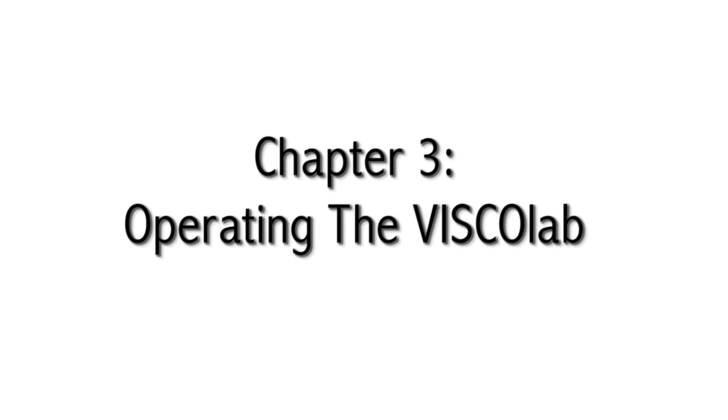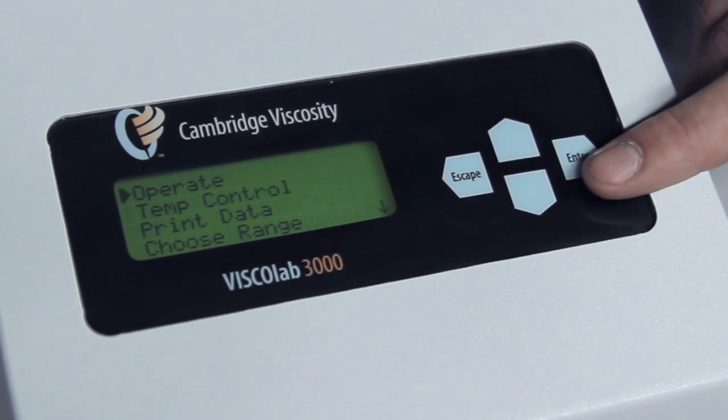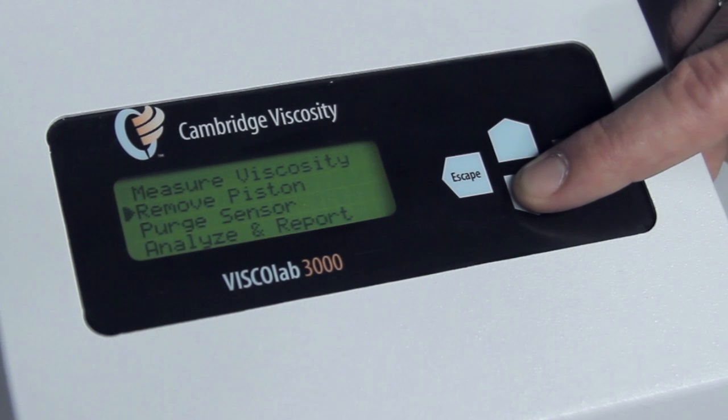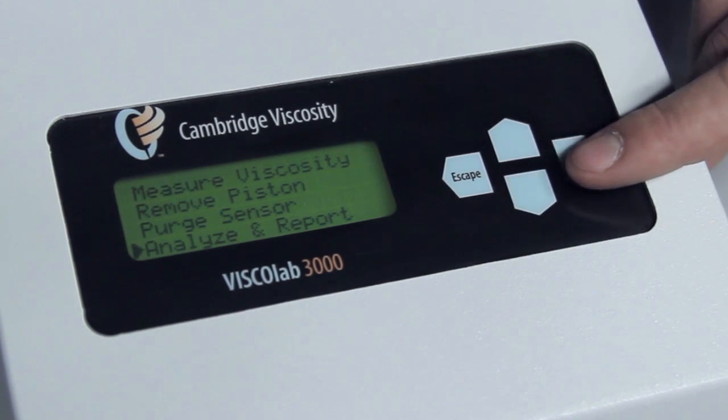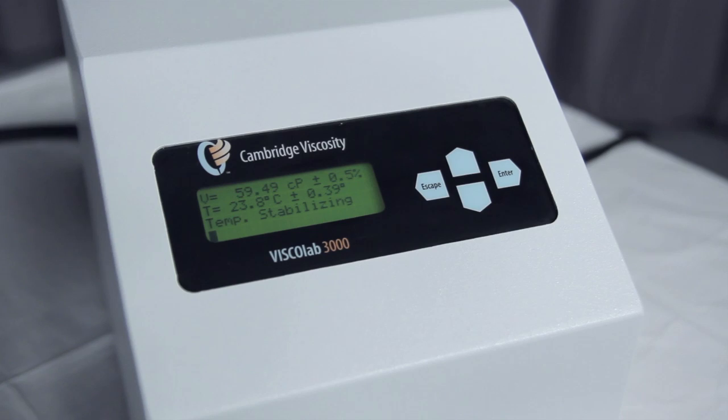Chapter 3: Operating the VISCOlab. Push the up arrow three times and press enter on operate. Now press the down arrow three times to select analyze and report. This should take a few minutes while the viscometer generates the report. The viscometer will go through the following six steps.